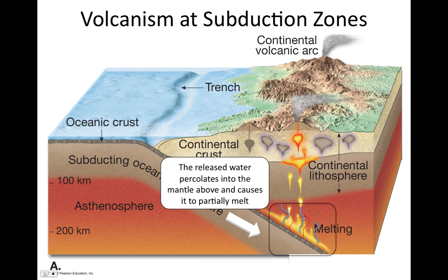We see this in other substances: introducing one substance into another can change the freezing or melting point. For example, dissolving sodium chloride — table salt — into water depresses the freezing point, so water won't freeze at zero degrees centigrade if salt is dissolved in it; you have to cool it further before it freezes. That's one example of how infusing one substance into another can change the melting temperature of the original substance, and that's what happens here: the infusion of water lowers the effective melting temperature of the mantle rock, causing it to partially melt.